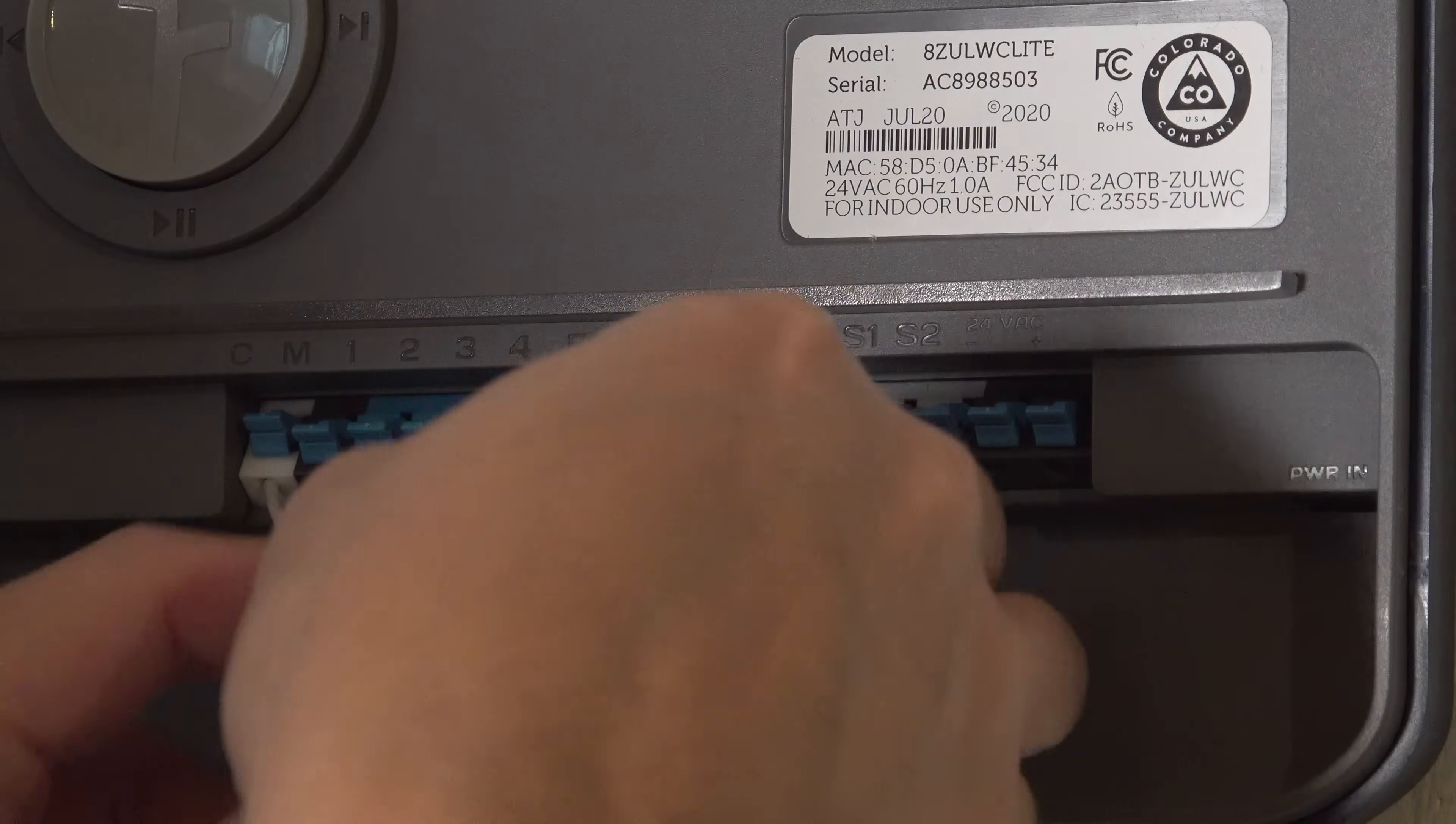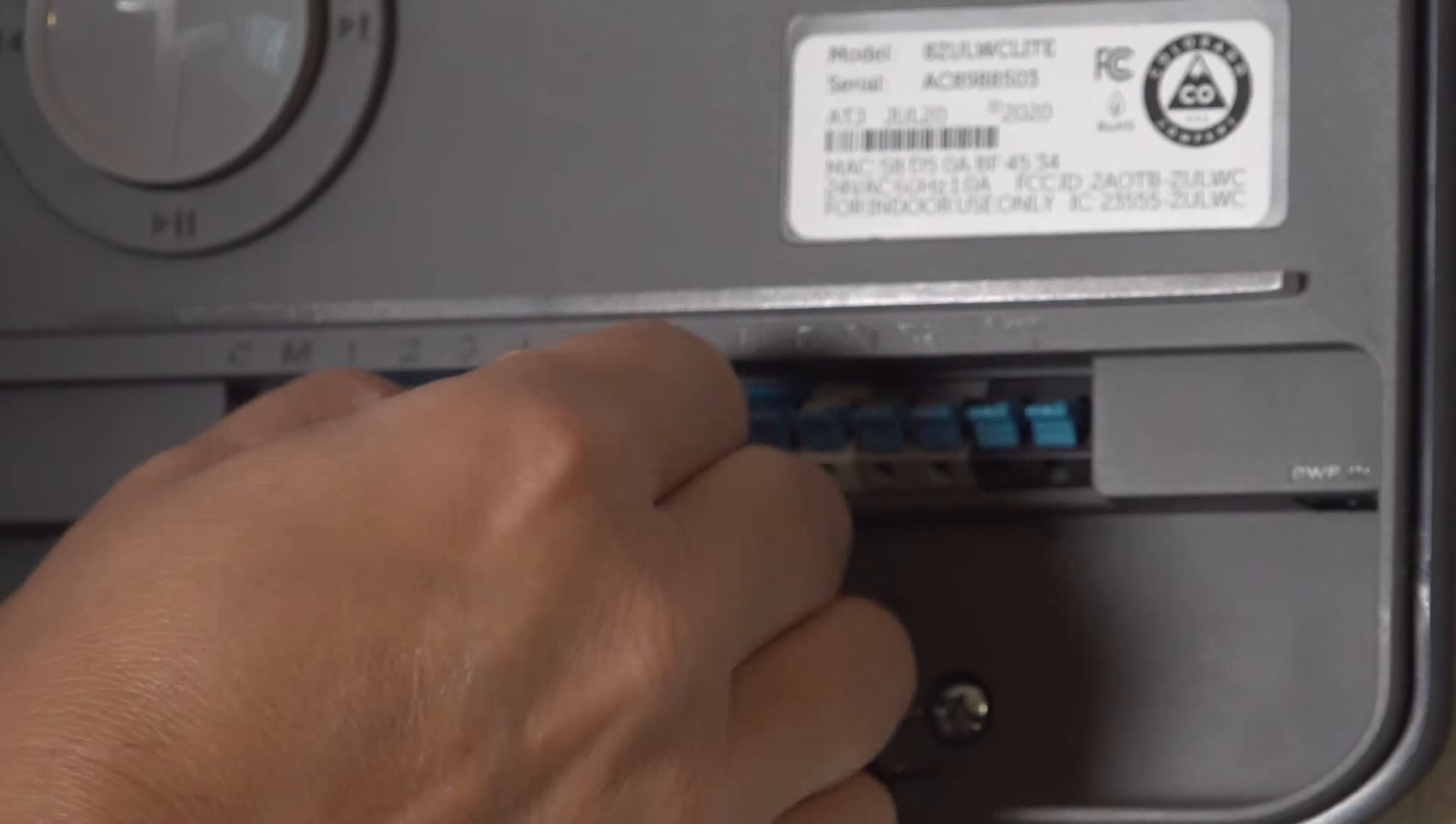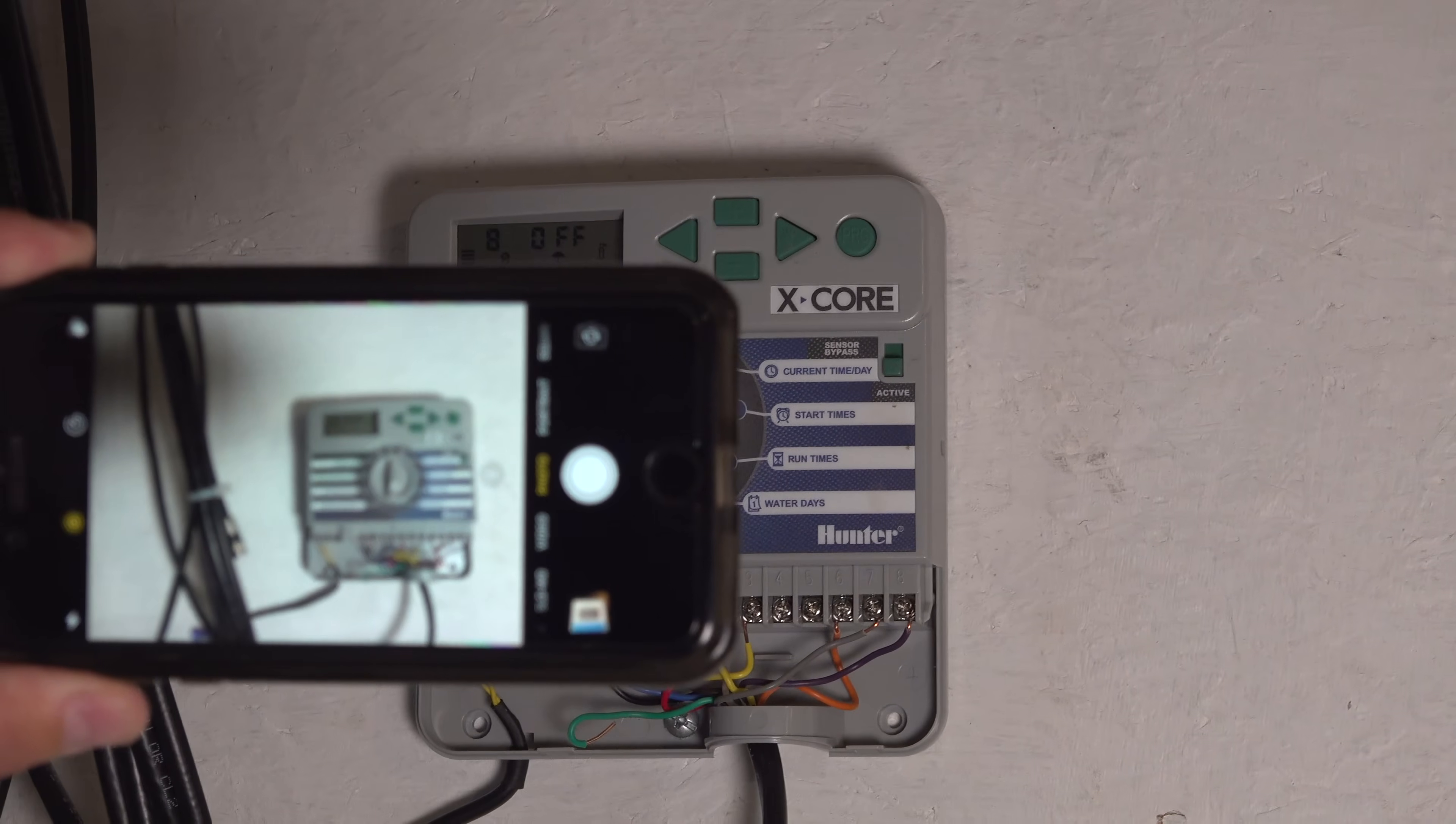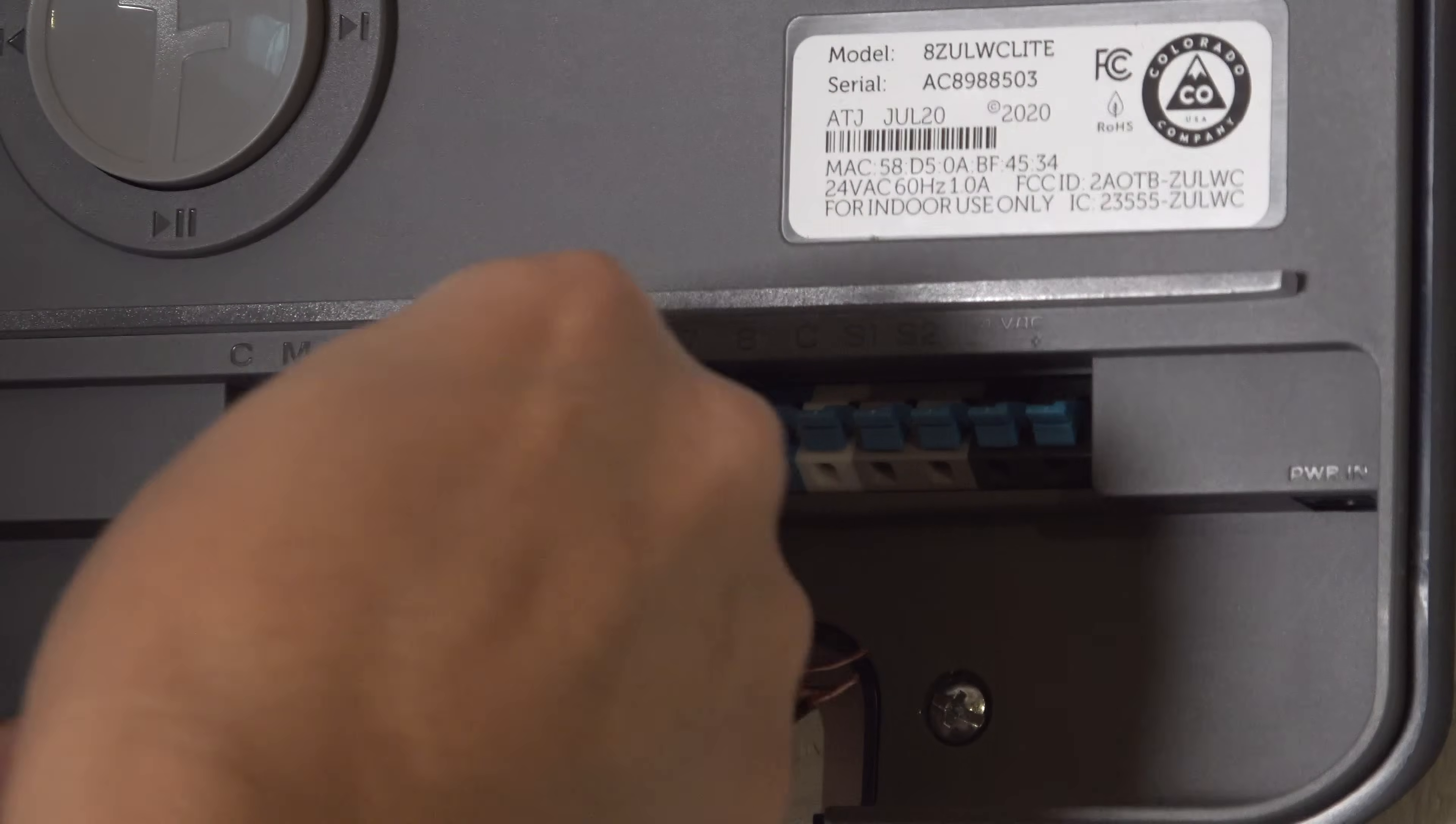Just continue to put each one of the colored wires into the same position that they were on your old controller. So again this is where you're going to refer to that picture you took of your old controller's wiring.